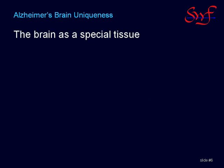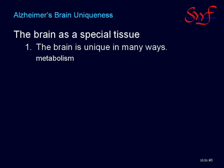Why is the brain special? There are several things that we can point to as highlights to illustrate this point. Some aspects of metabolism are unique to the brain. The phosphorylation cycle, in which brain enzymes are phosphorylated and dephosphorylated every 90 seconds, is a good example of this.